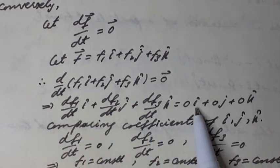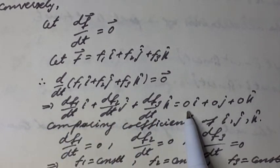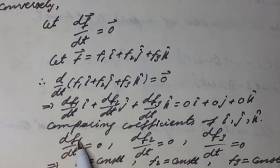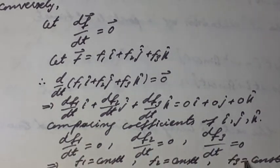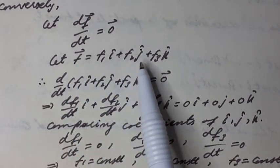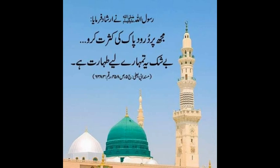Comparing coefficients of i-hat, j-hat, and k-hat on both sides, we have df1 over dt equal to 0, df2 over dt equal to 0, and df3 over dt equal to 0. This implies f1 is equal to a constant, f2 is equal to a constant, and f3 is equal to a constant. This implies the vector f is a constant vector. Hence the proof. Thank you.